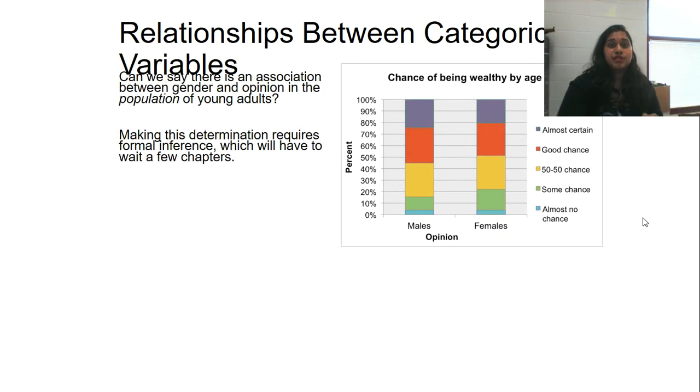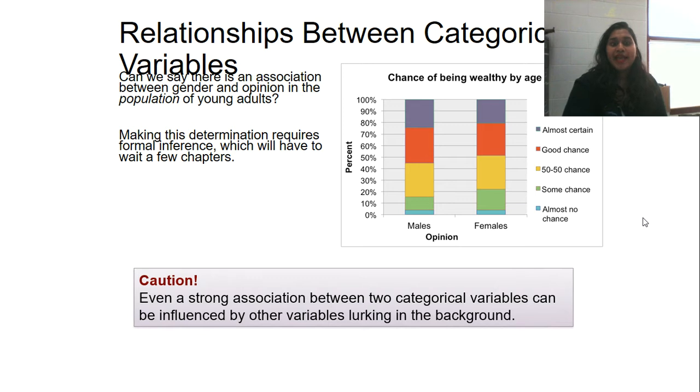So the question says, can we say that there is an association between gender and opinion in the population of young adults? Making this determination requires formal inference, which we'll have to wait for a few chapters. So why can't we make this inference? That's an important question to ask. Even a strong association between two categorical variables can be influenced by other variables looking in the background. This is the most important part of statistics is to ask questions. In that very first or second slide, it told you that that final italicized was asking questions. Is there an association? Very possibly. There's some sort of link. But is that all that is influencing this? Well, we didn't ask those questions. We don't know what our outside information is. We don't know all the details of this study just yet. So it is important not to make an inference without enough information. And so that's what they mean by that formal inference. We have enough information to discuss the data, to discuss and analyze the data.